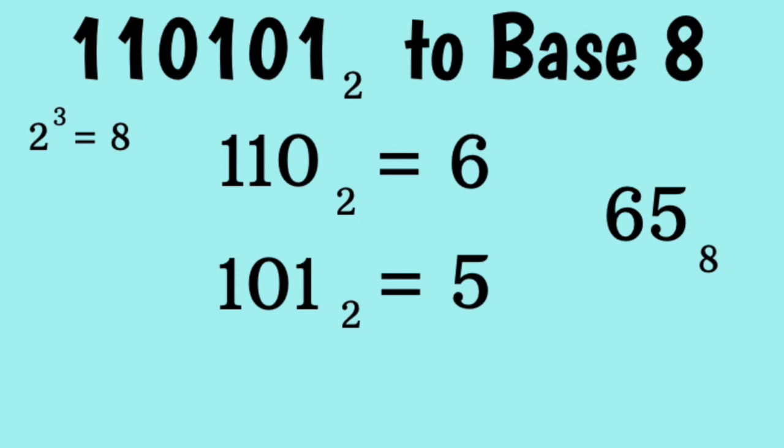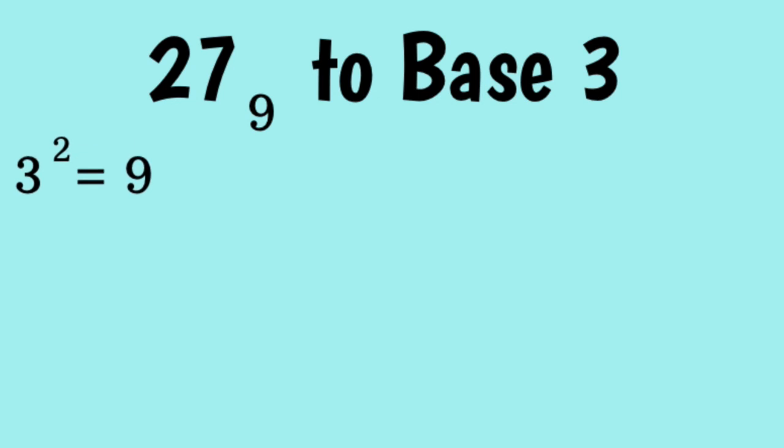If your groups aren't all the same size, make sure the first group is the one with fewer elements. Convert 27 base 9 to base 3. First, note that 3 squared equals 9. And since we're converting from a larger to smaller base, we must convert each digit into two digits.